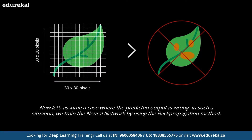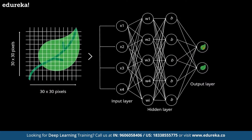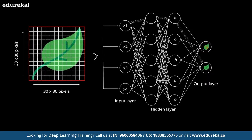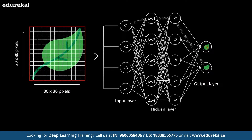If the predicted output is wrong, we train the neural network using the back propagation method. Initially, while designing the neural network, we initialize weights to each input with some random values. These weights denote the importance of each input variable. If we propagate backward in a neural network and compare the actual output to the predicted output, we can readjust the weights of each input so that the error is minimized. This results in a more accurate output — and this is exactly what back propagation means.